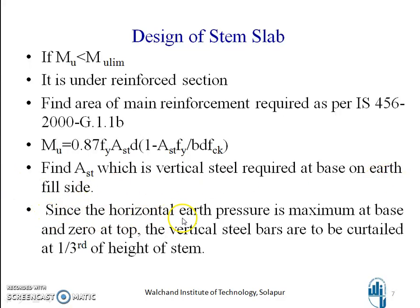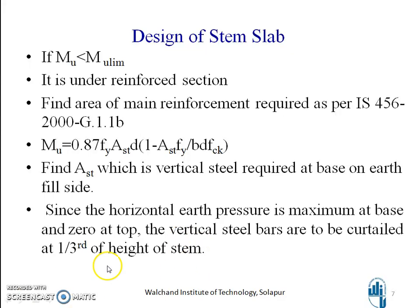Since the horizontal pressure is maximum at the base and zero at the top, the vertical steel bars are to be curtailed at one-third of the height of the stem. If we don't curtail, there will be unnecessary wastage of steel since the pressure decreases towards the top. Therefore curtailment of bars at one-third makes the design economical.